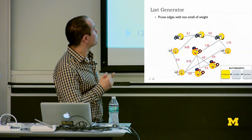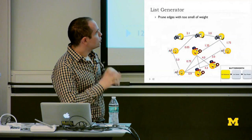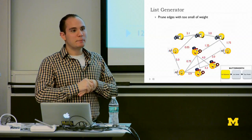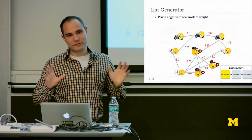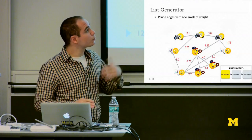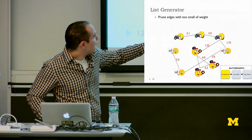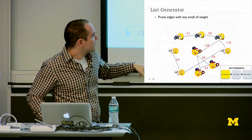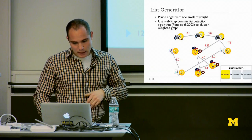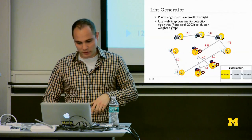One problem this procedure may create is networks that are way too dense — in the first iteration, there were edges between everyone and the community detection algorithm just output one giant list. So we prune edges where the weight is too small, creating a weighted network that produces better lists. We use the walk-trap community detection algorithm, which uses random walks to find communities with high modularity.